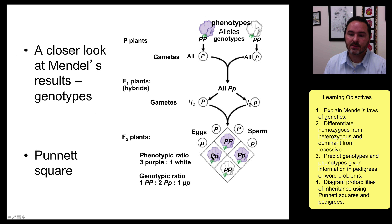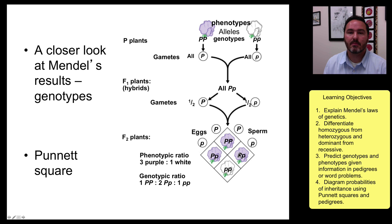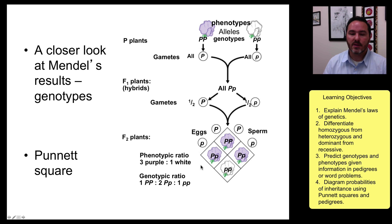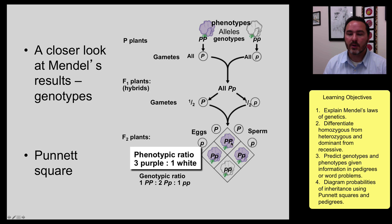If you look at the phenotypes, you're going to have three purple flowered pea plants for every one white flowered pea plant — that three to one ratio — which is exactly the ratio that he saw. Mathematically, you can figure this out. We call this the three to one phenotypic ratio.